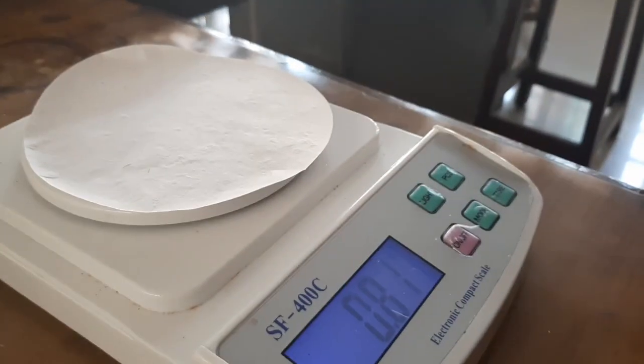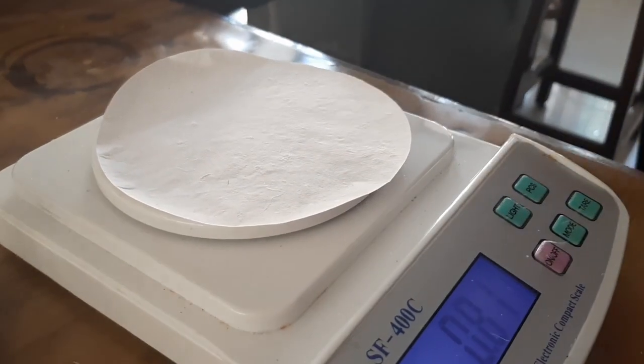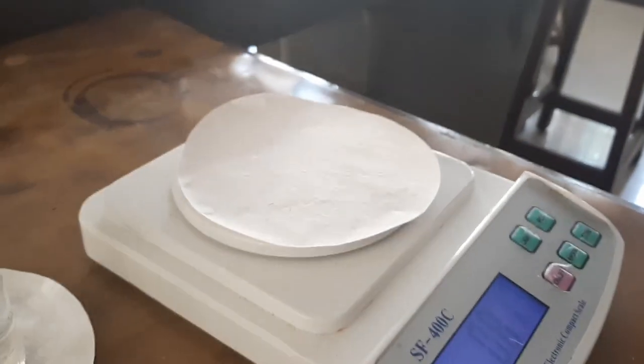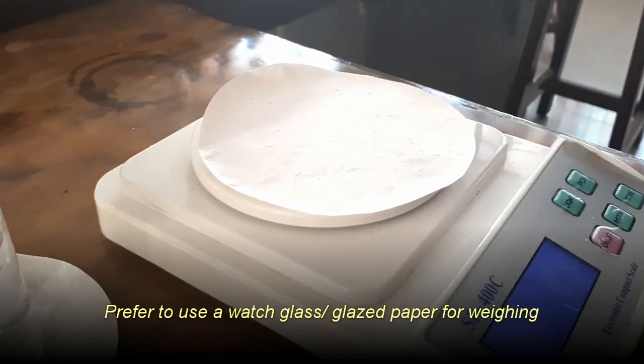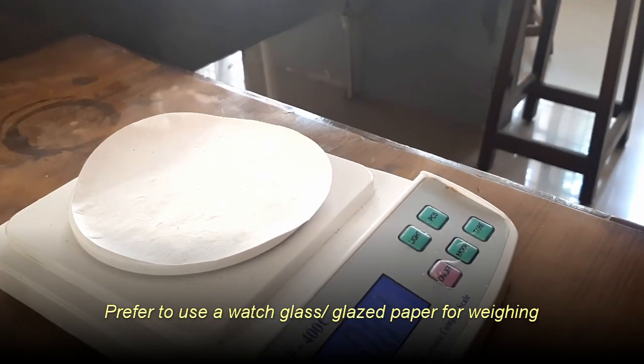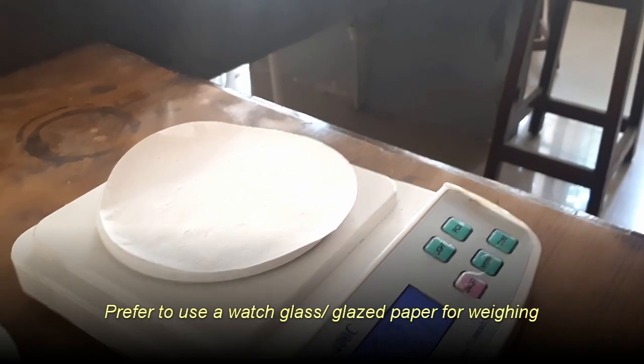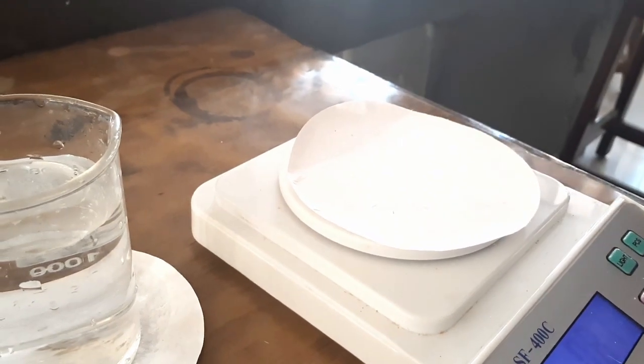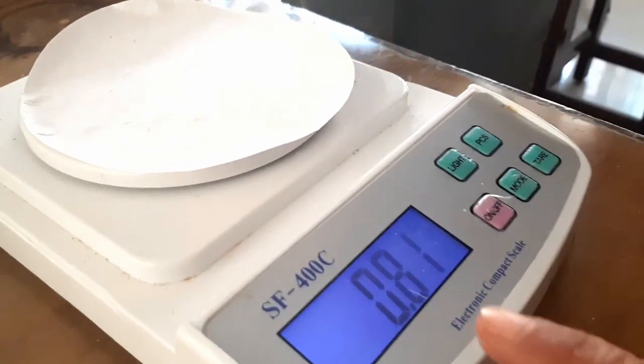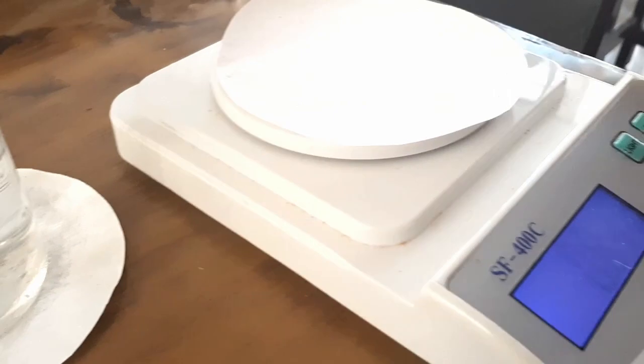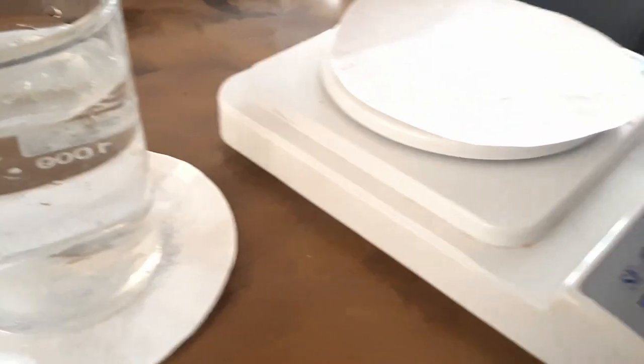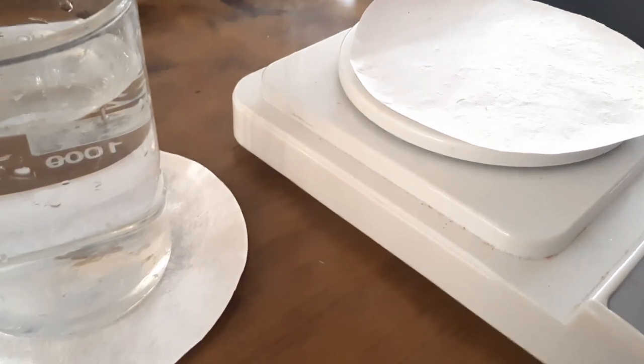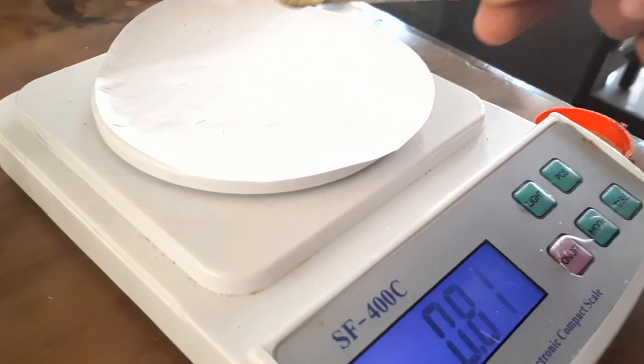So we are now going to add Mohr salt to this so that the total weight here becomes 2.77 grams. We need 1.96. This is already showing 0.81, so I am going to add till the weight here becomes 2.77 grams.